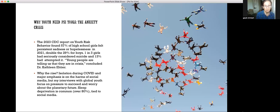Let's make the point that kids are in crisis. The 2023 CDC report on youth risk behavior found that 57 percent of high school girls felt persistent sadness or hopelessness in 2021, double the 29 percent for boys. One in three girls had seriously considered suicide, and 13 percent had attempted it. Young people are telling us they're in crisis, concluded Dr. Kathleen Ethier.